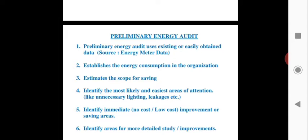After that, the auditor establishes the energy consumption in the organization. Establishing energy consumption means he will see how much energy is consumed in the academic block, departmental block, laboratory, and hostels. We know that most of the energy is consumed in the laboratory, so he will go there and see if there is any scope of saving.